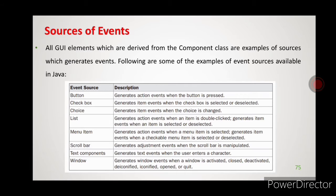Next is menu item. For example, when you want to save a file in Word, you go to the File menu and a list of sub-menu items is available — New, Open, Save, Save As. These are called menu items. If you click on one of those items, it will generate an action event. If it is a checkable item, it will generate an item event.